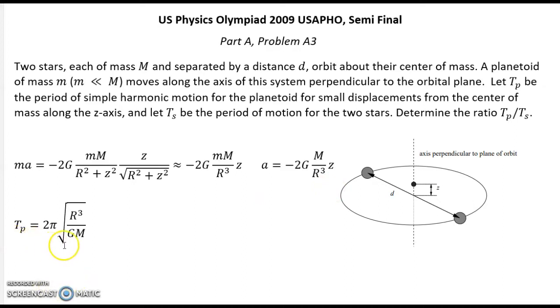So we can just write expression for period Tp. That will be this expression for period of oscillation. Now let's count what is the period of rotation for these two stars.